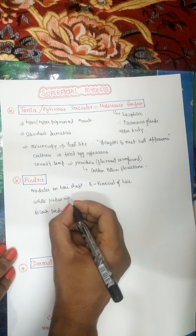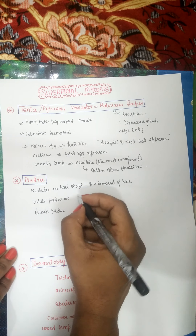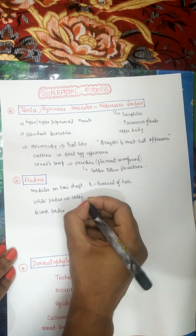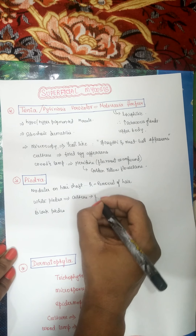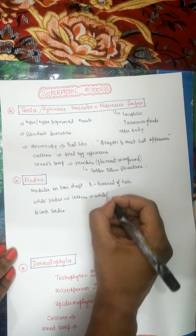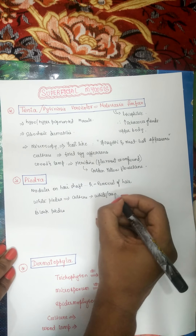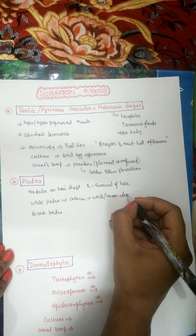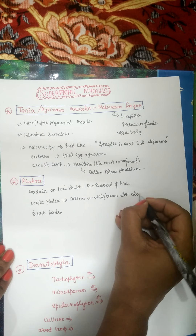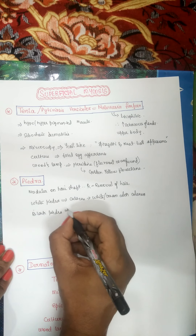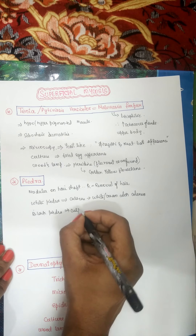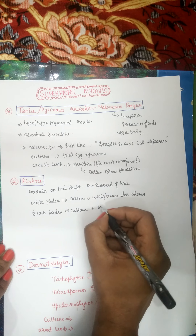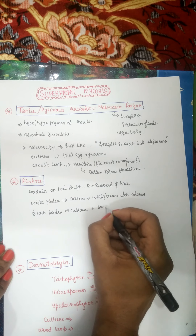You should remember that white piedra on culture gives white or creamy colonies, whereas black piedra on culture gives brown to black colonies.